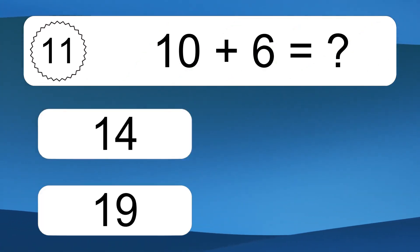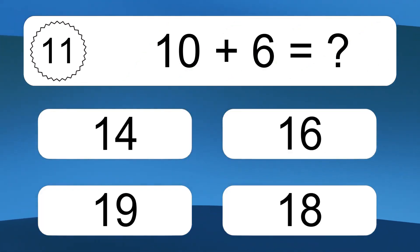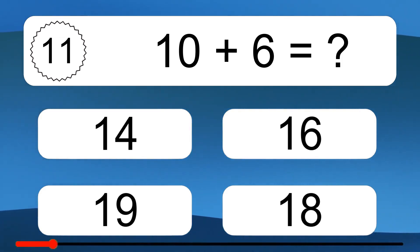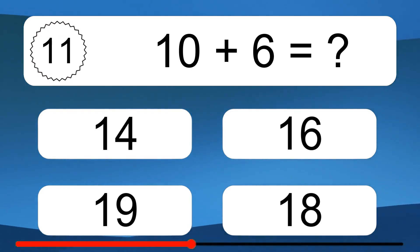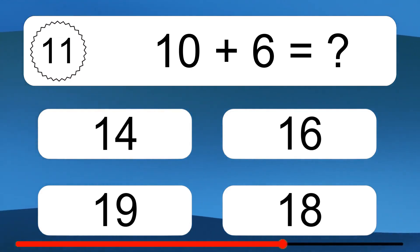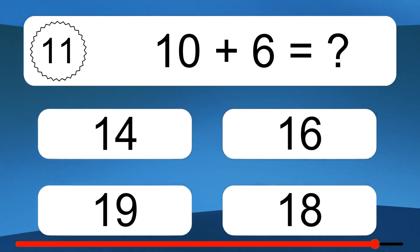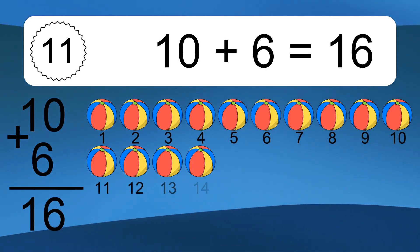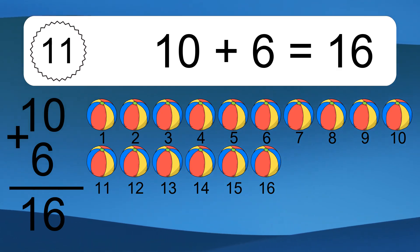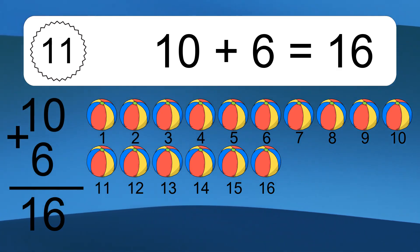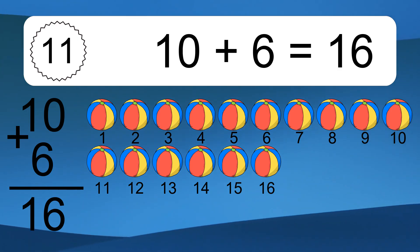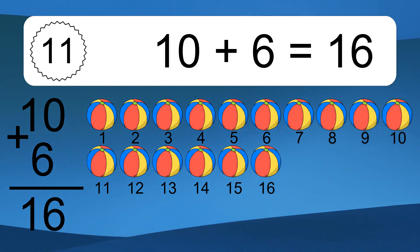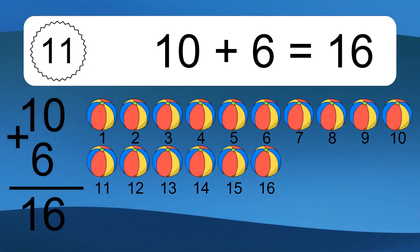Ten plus six equals what? Ten plus six equals sixteen. Let's count it: one, two, three, four, five, six, seven, eight, nine, ten, eleven, twelve, thirteen, fourteen, fifteen, sixteen.